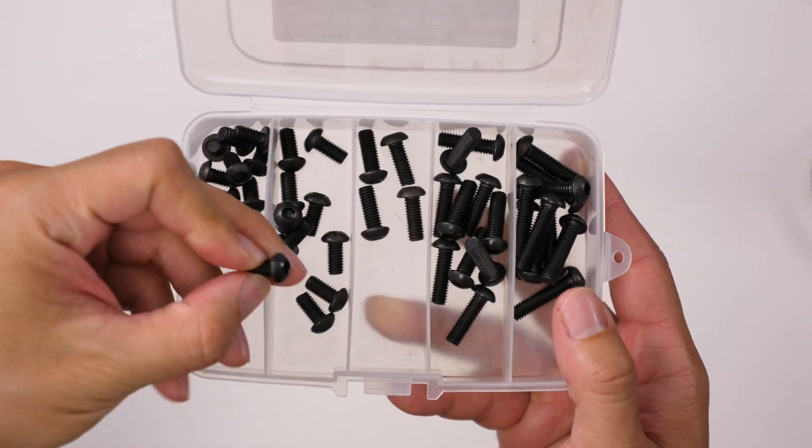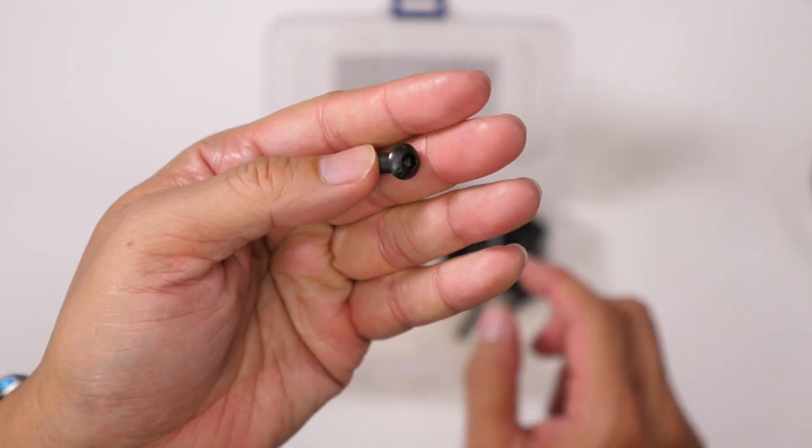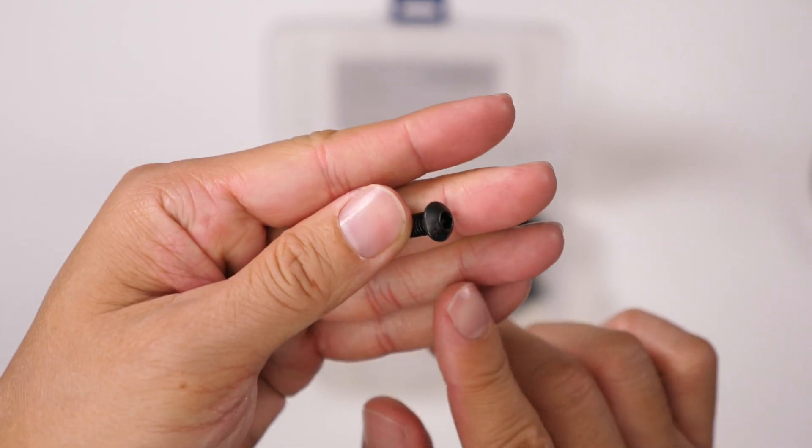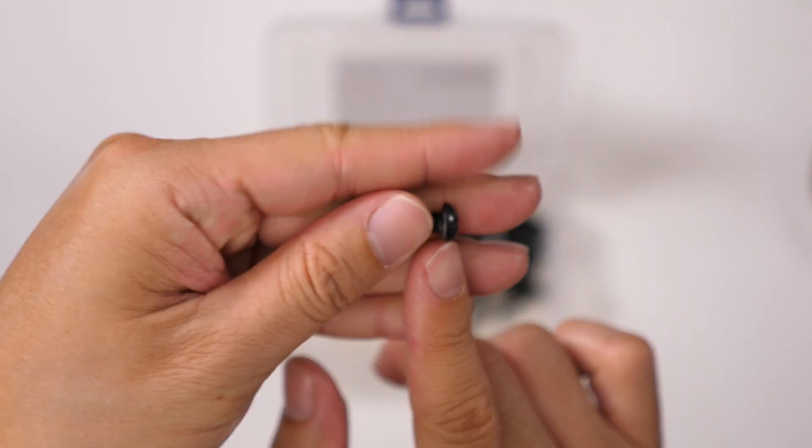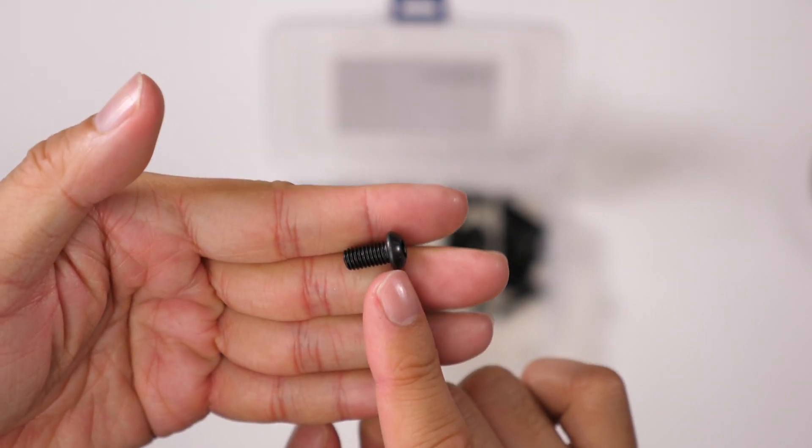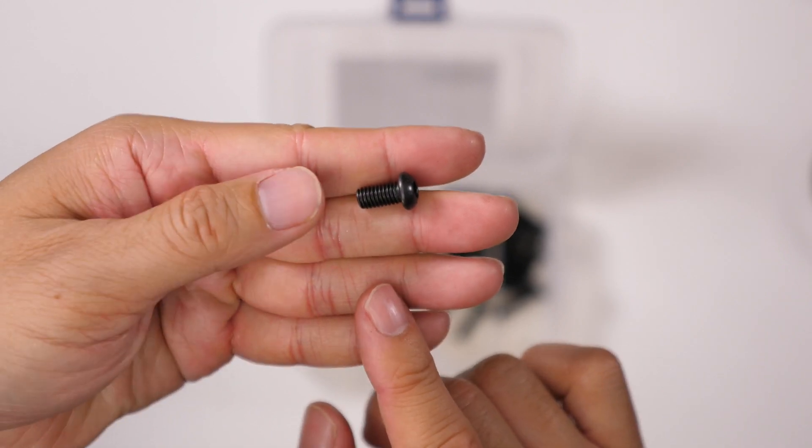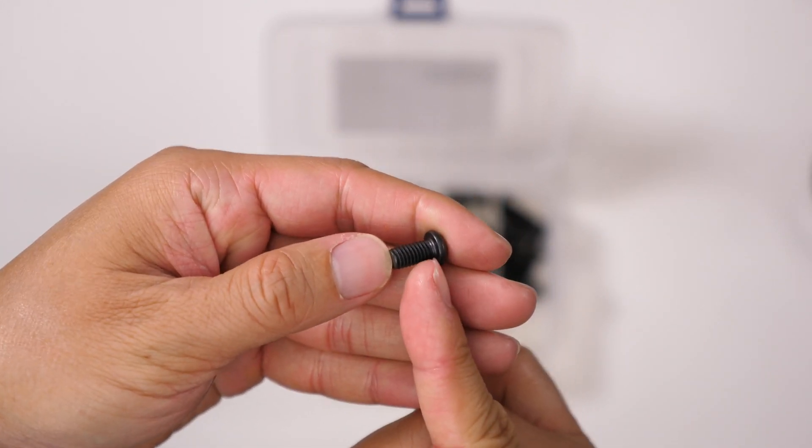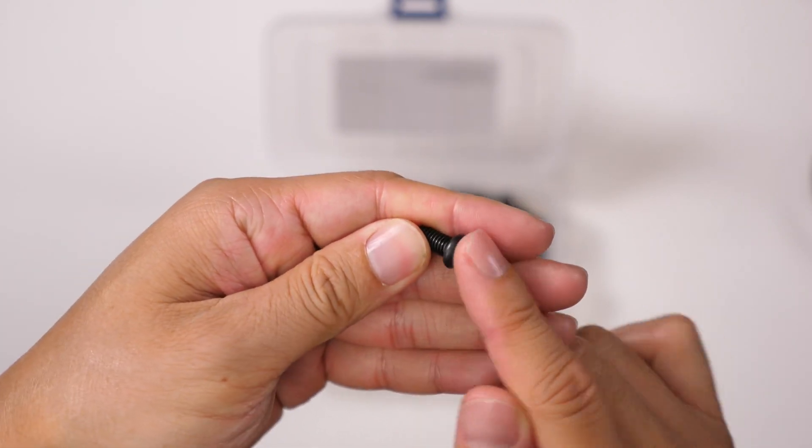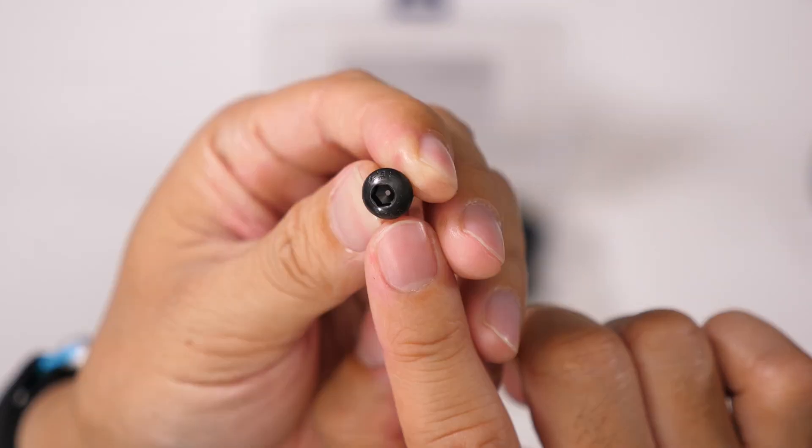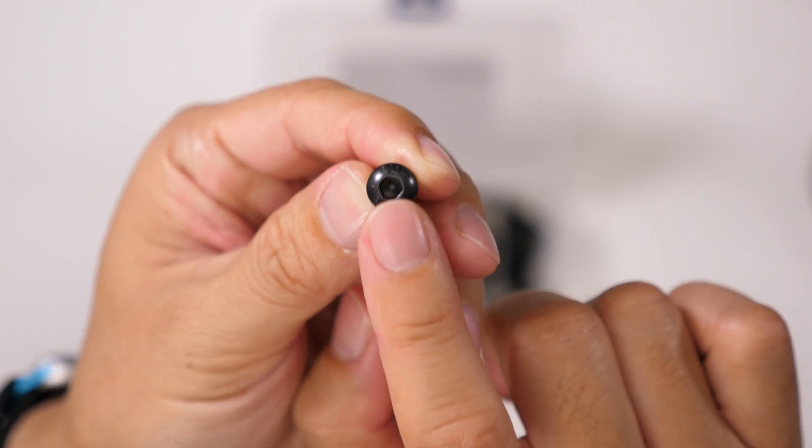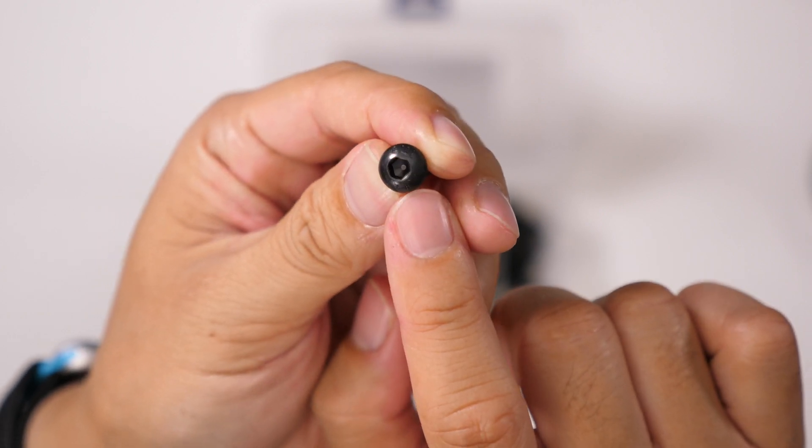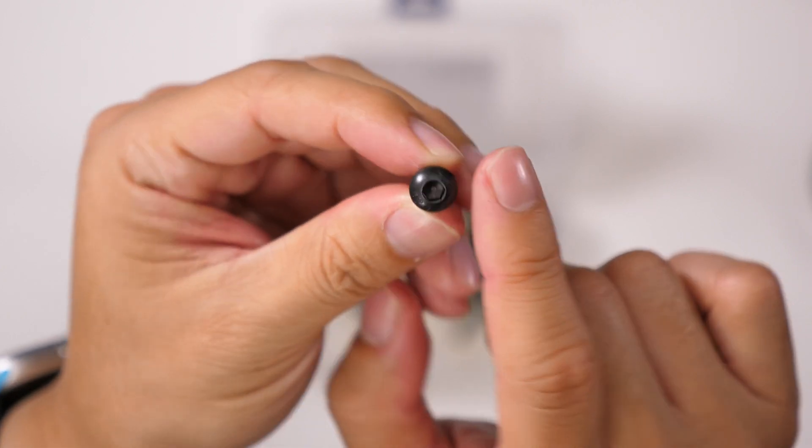So let's just grab one of these out of here. It's called a button head because it's rounded at the top like a button, and it is flat on the underside there but rounded at the top. You can see where the hex key would fit in here to allow you to drive this into the thread.